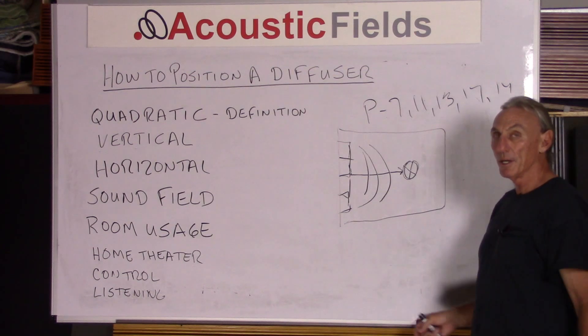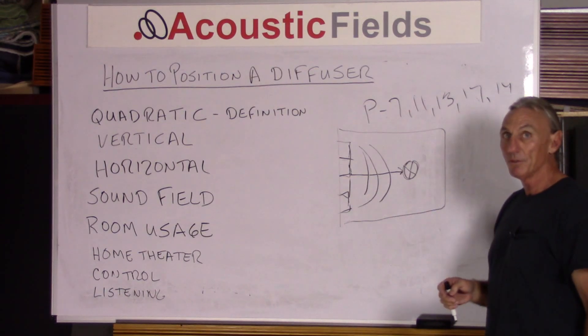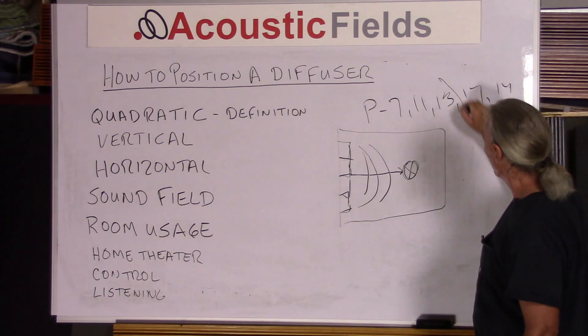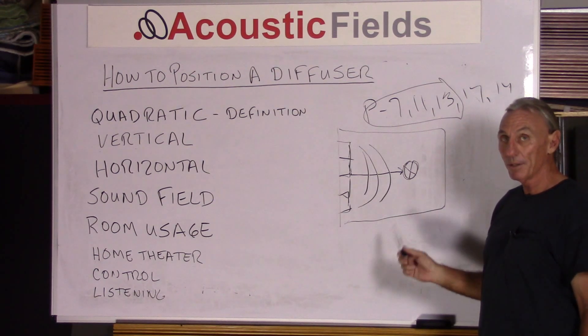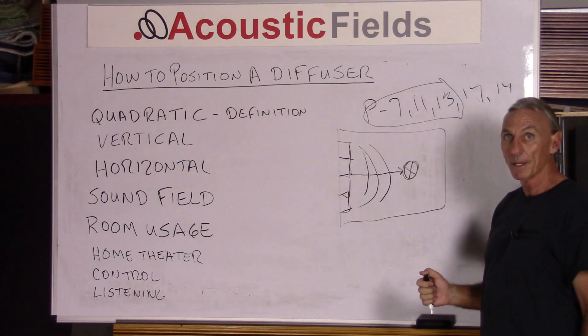If you have any questions about that, send me your information and I'll be happy to tell you what prime number diffusion will work for your situation. We offer the 7, 11, and 13 on our website — you can build it yourself provided you have the proper distance. If you're unsure, drop me a line or call me. Thank you. If you enjoyed today's video, give me a thumbs up. Leave questions in the comments section and I'll answer them. If there are other topics you'd like to see in a video, send me an email at info@acousticfields.com. I release a new video about every week, so stay tuned to our YouTube channel.